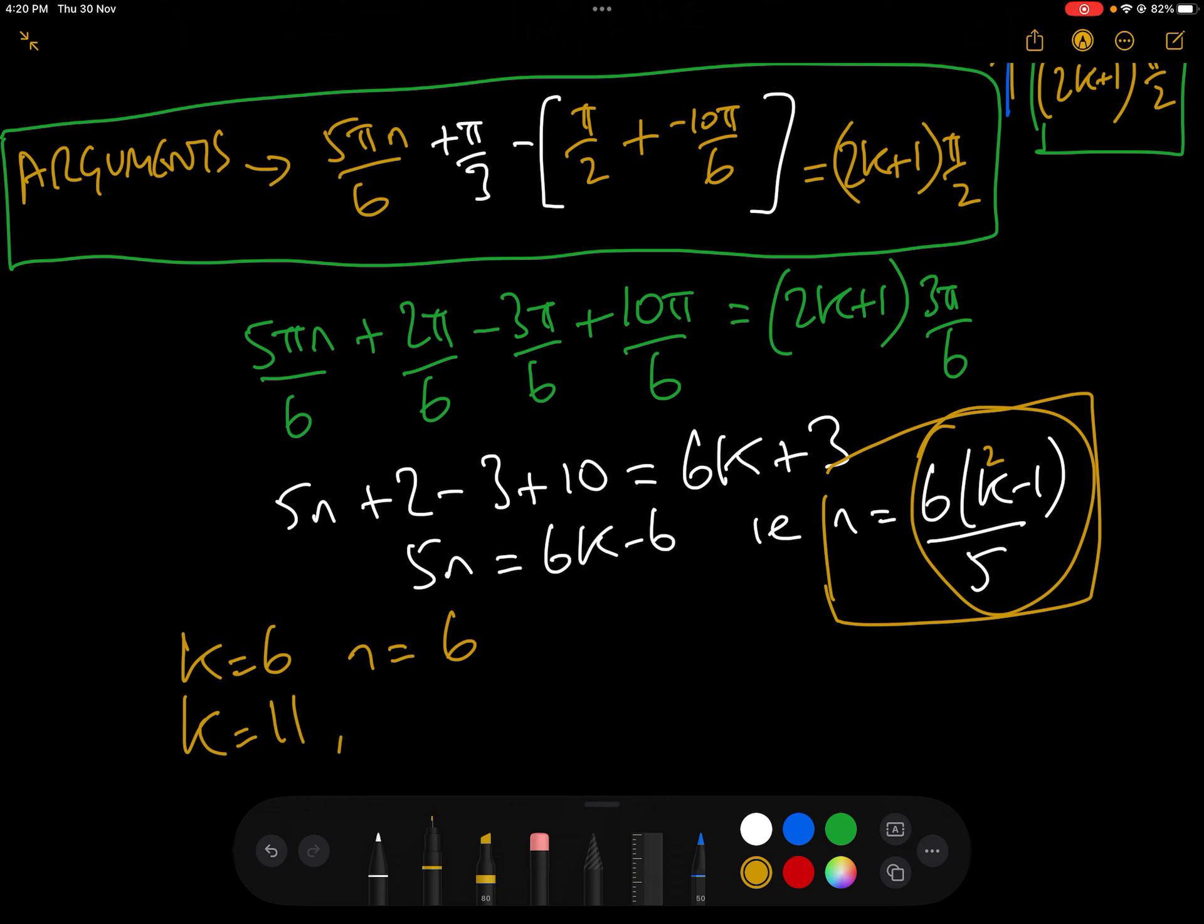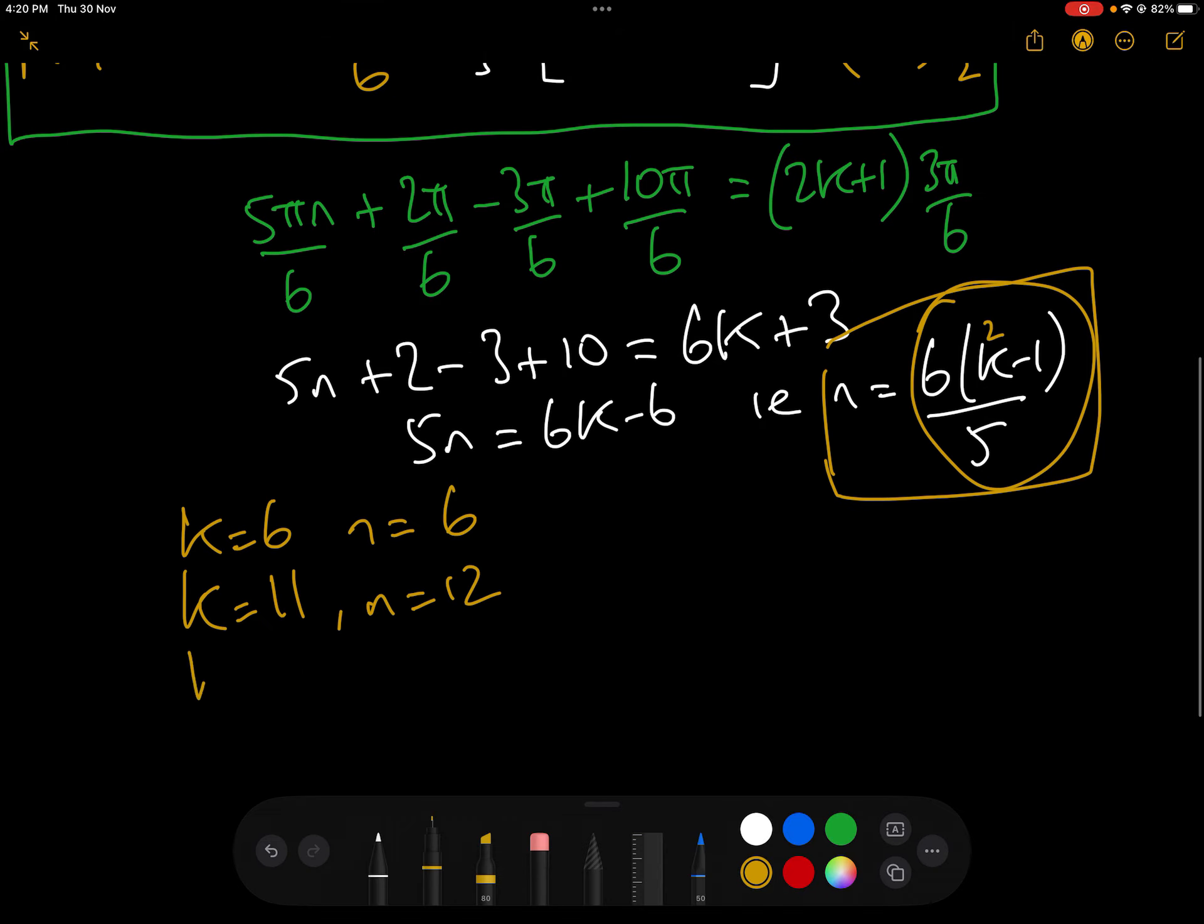The next k would be k equals 11. When we put that in, we get 60 over 5, which means n would equal 12. And when we put in k equals 16, that would be 6 times 15 over 5, which would be 90 over 5, which would be 18.